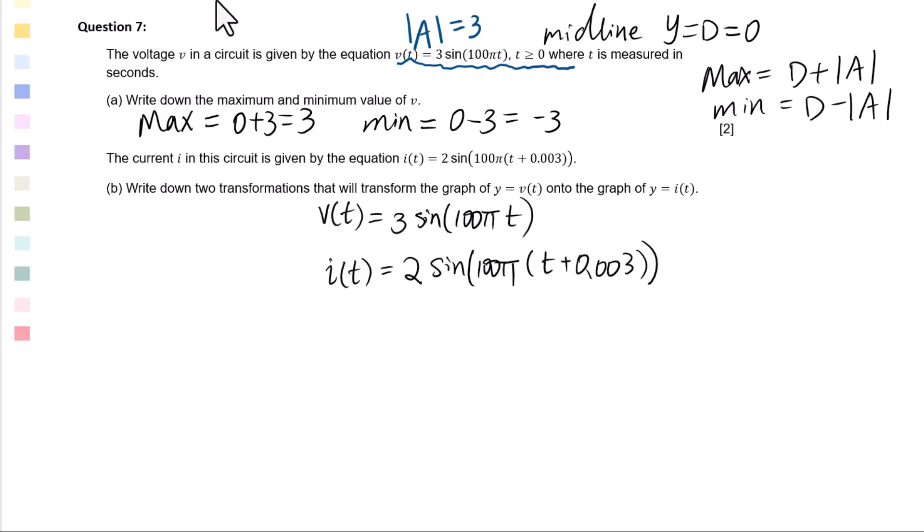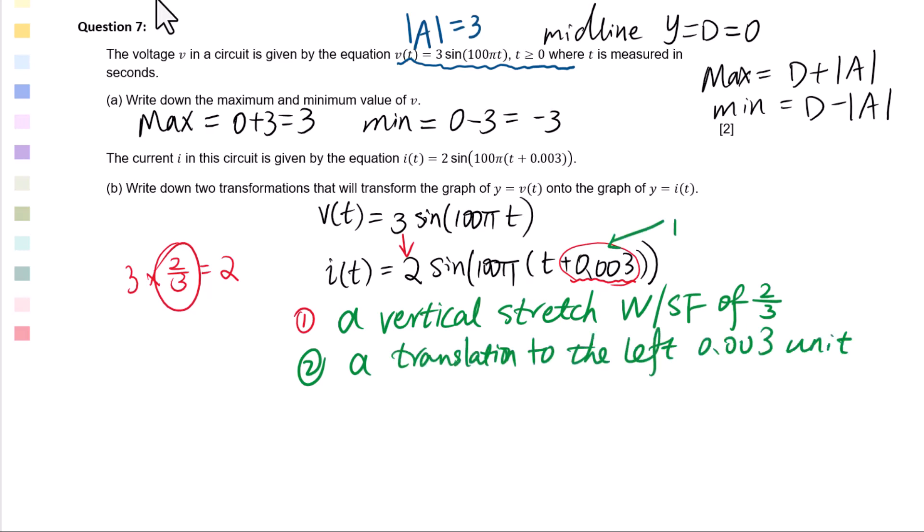A vertical stretch from 3 changing into 2. There is a horizontal translation. 3 × 2/3 = 2. This will be the scale factor. First step: A vertical stretch with the scale factor of 2/3. Second step: A horizontal translation to the left 0.003 unit.